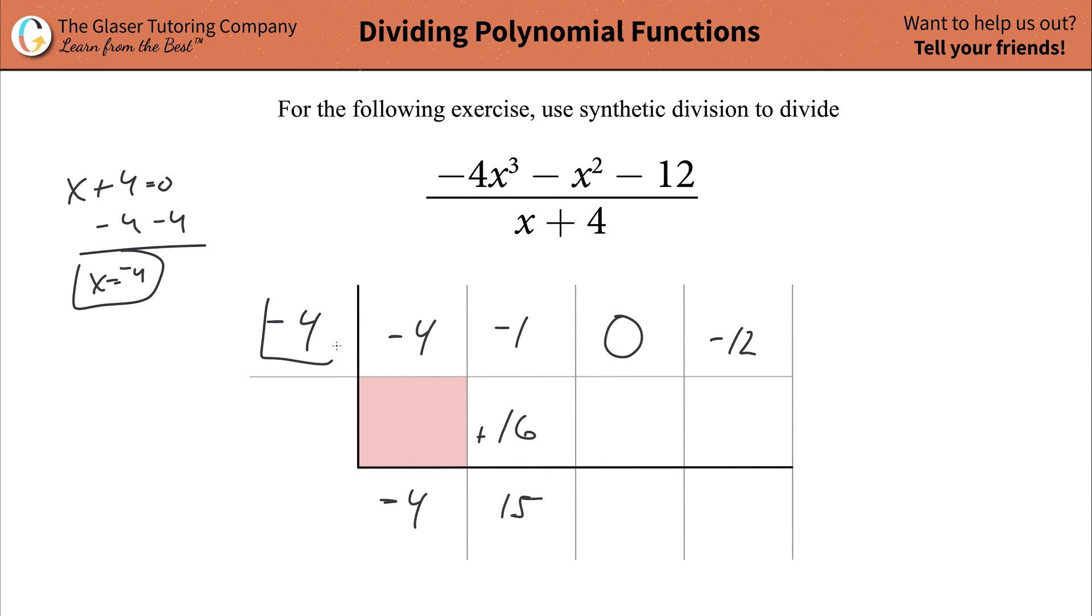Then take the 15, multiply it by that outside value of -4. It's going to be a negative value overall. And 15 times 4 is going to be 60. Then all you got to do is simply add this column together. That's going to be a total of -60.